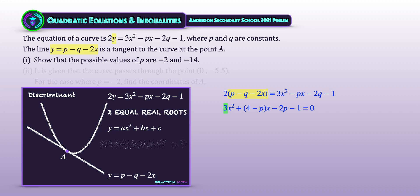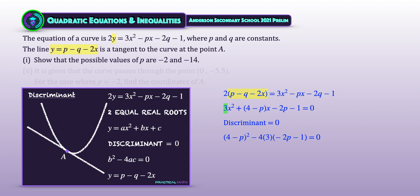For a general quadratic y = ax² + bx + c, discriminant b² − 4ac = 0. We set our discriminant to 0, where b² = (4 − p)², minus 4ac where a = 3 and c = −(2p + 1). Expanding and simplifying, factorizing gives (p + 2)(p + 14) = 0. Solving for p gives the answer for part 1: p = −2 or p = −14.